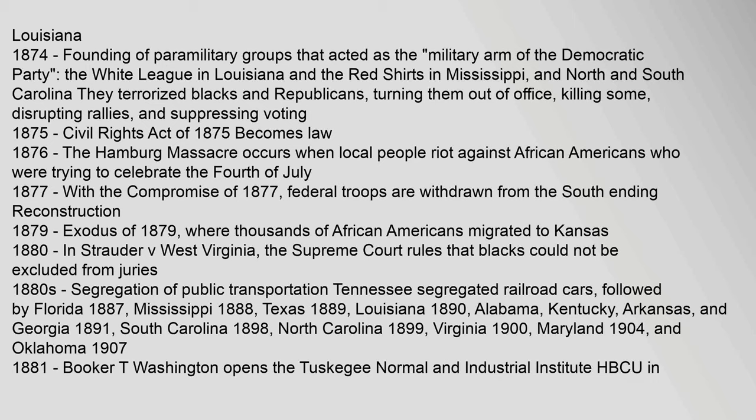In 1877, with the Compromise of 1877, federal troops were withdrawn from the South, ending Reconstruction. In 1879, the Exodus of 1879 saw thousands of African Americans migrate to Kansas and Texas. In 1880, in Strauder v. West Virginia, the Supreme Court ruled that blacks could not be excluded from juries. In the 1880s, segregation of public transportation spread: Tennessee segregated railroad cars, followed by Florida in 1887, Mississippi in 1888, Texas in 1889, Louisiana in 1890, Alabama, Kentucky, Arkansas, and Georgia in 1891, South Carolina in 1898, North Carolina in 1899, Virginia in 1900, Maryland in 1904, and Oklahoma in 1907.